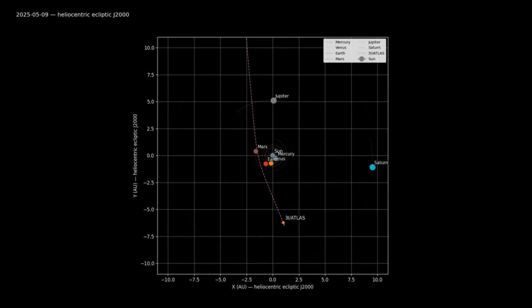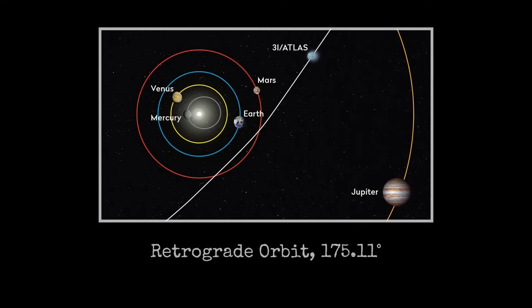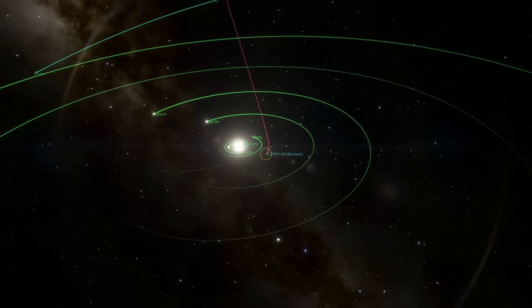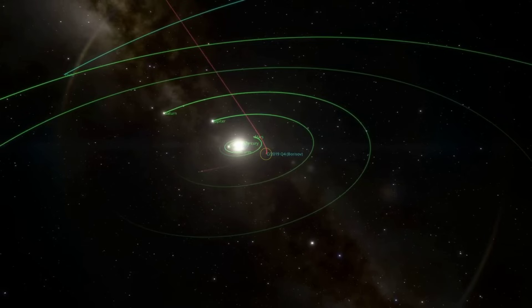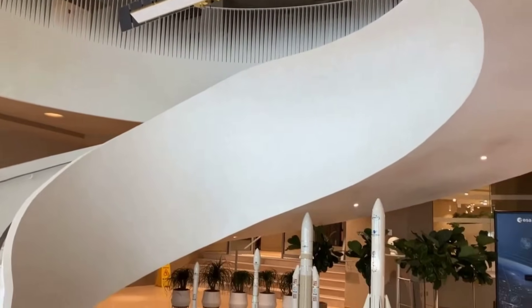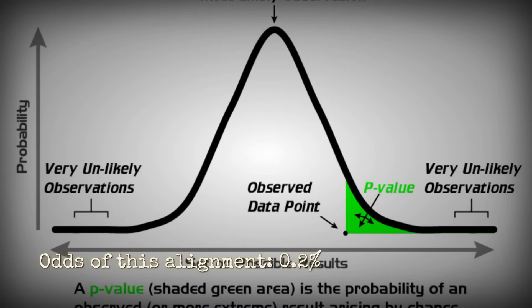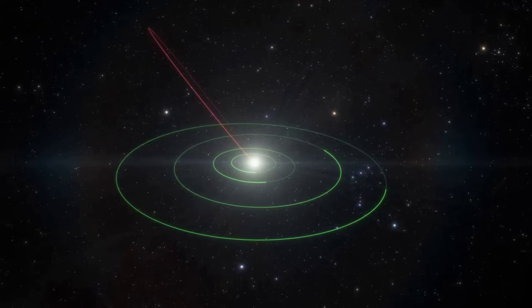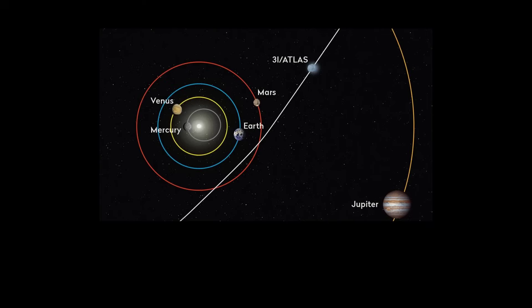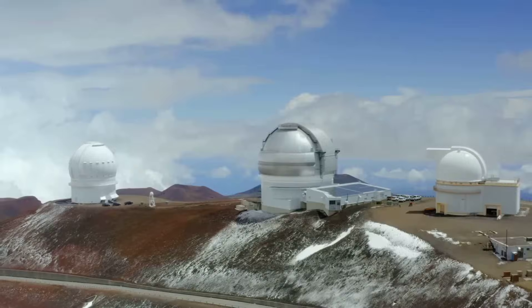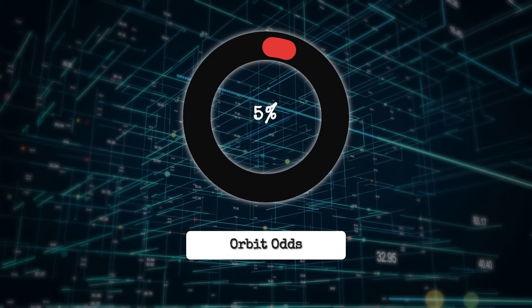Trajectory models for 3I-Atlas refuse to settle into anything familiar. The orbital inclination clocks in at 175.11 degrees, a retrograde sweep almost perfectly aligned with the ecliptic. Statistically, a 1 in 500 shot. Models run by the ESA Mission Planning Group peg the odds of this precise alignment at just 0.2%. Perihelion defies expectation. The closest approach to the sun lands on the far side, with Earth and every major telescope locked out of a direct line of sight. Only 7% of possible orbits would produce this configuration, a detail that does not escape seasoned mission designers.